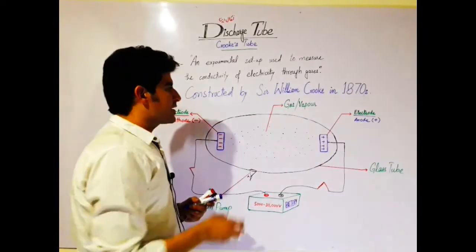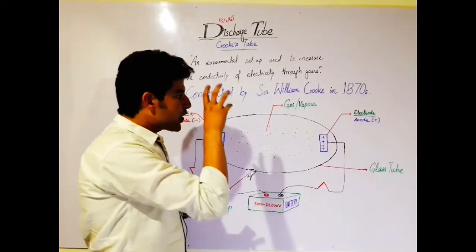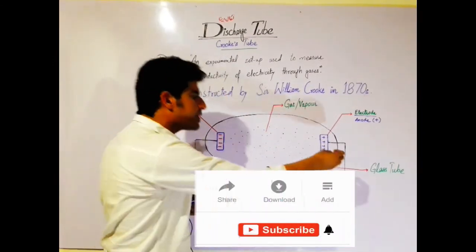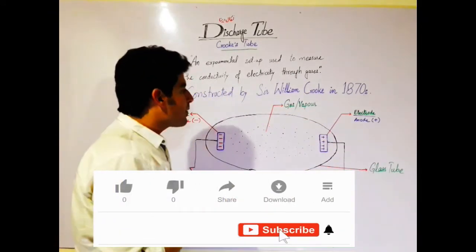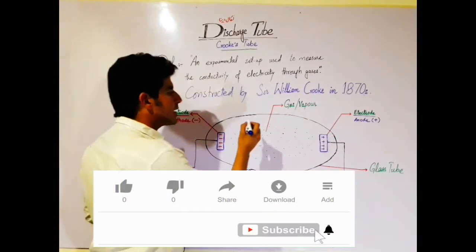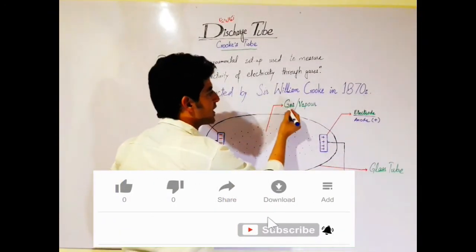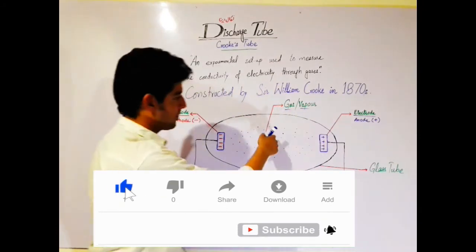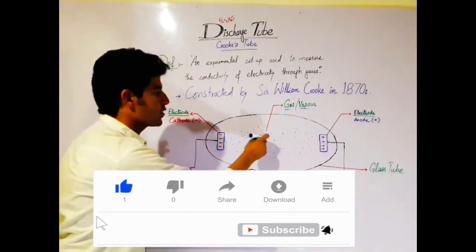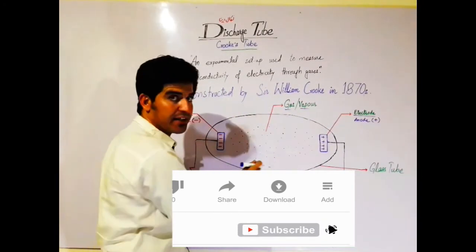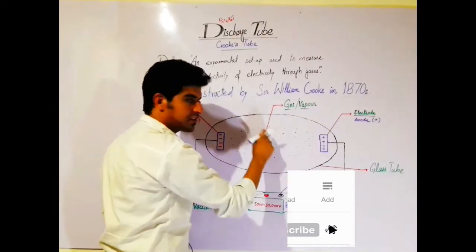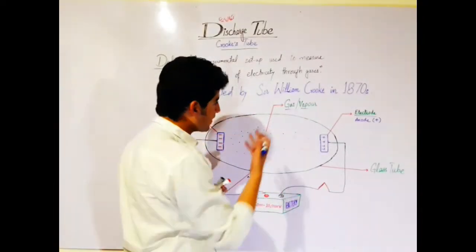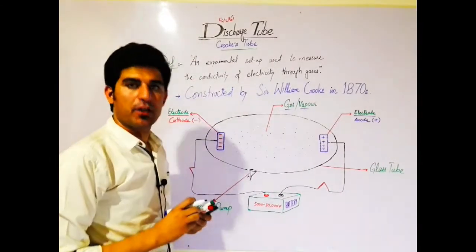This is the vacuum tube — this glass tube. Inside it there may be a mixture of gases, or there may be vapors. These dots here represent particles — gas particles or vapor particles, vapor molecules.